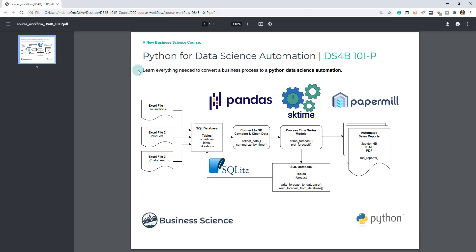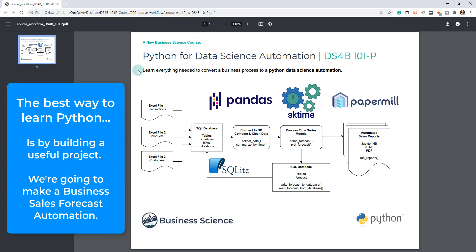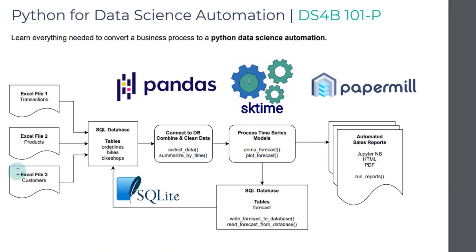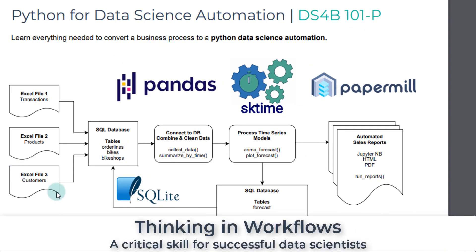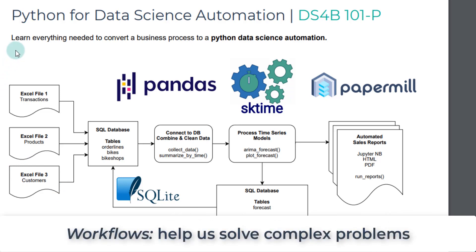Our course project is going to take us through learning Python for data science automation by using a project as our way to learn pandas, SKtime, papermill, and all sorts of different tools and techniques to do data science and automate data science. This workflow will be used throughout the course, and it's good at a high level to showcase what steps we're going to go through in order to solve the problems outlined in the course.